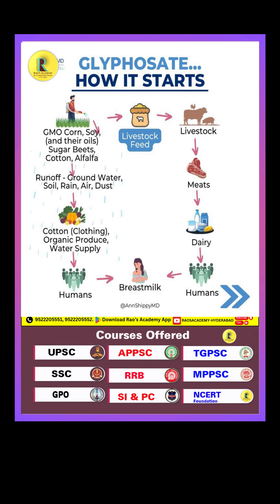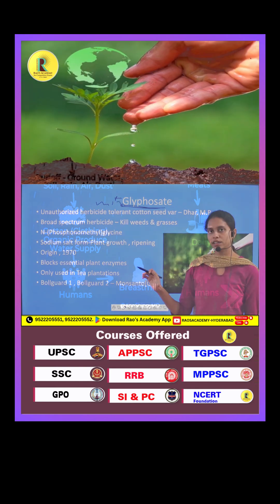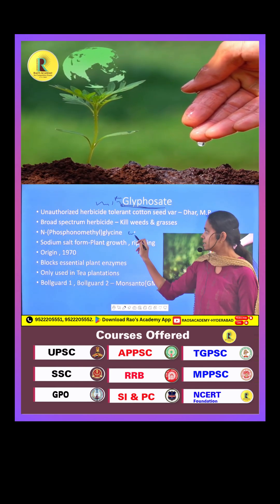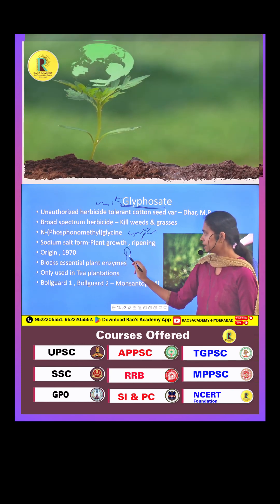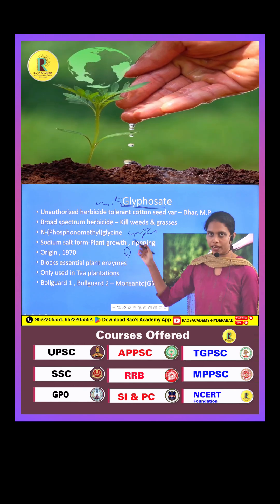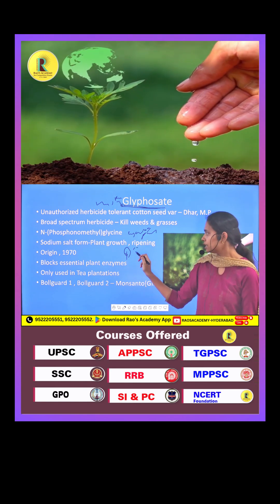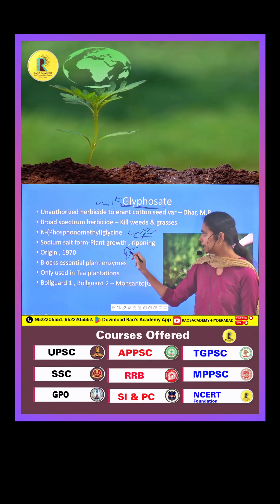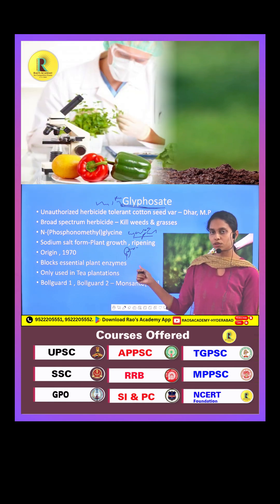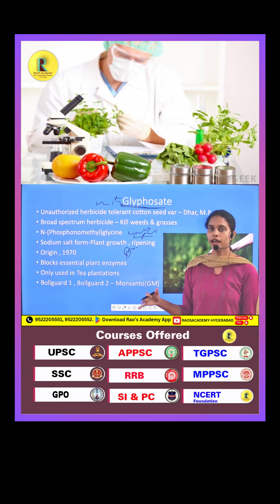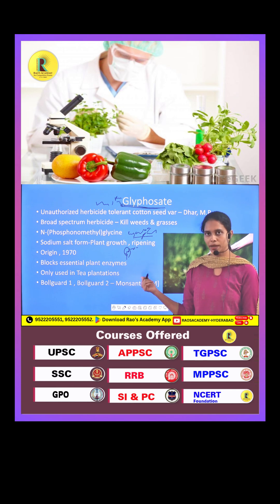Glyphosate acts by targeting an essential plant enzyme. When this herbicide is sprayed on a weed, the chemical blocks that essential plant enzyme present within the leaves of the plant. This reduces the plant's growth and ultimately kills the weed. By blocking this essential plant enzyme, glyphosate effectively removes or kills the weeds.